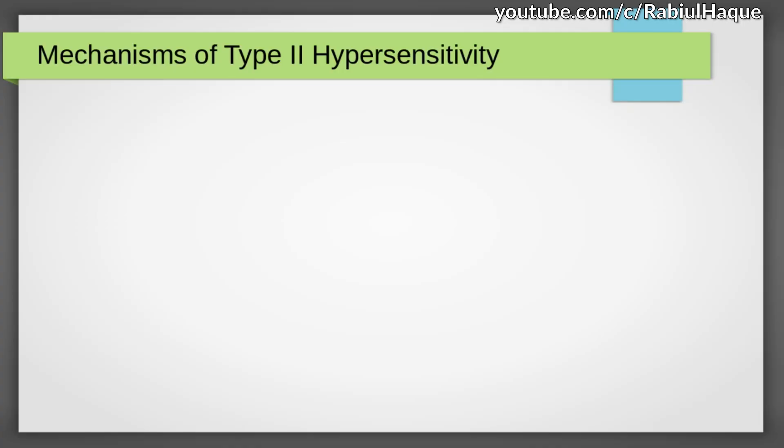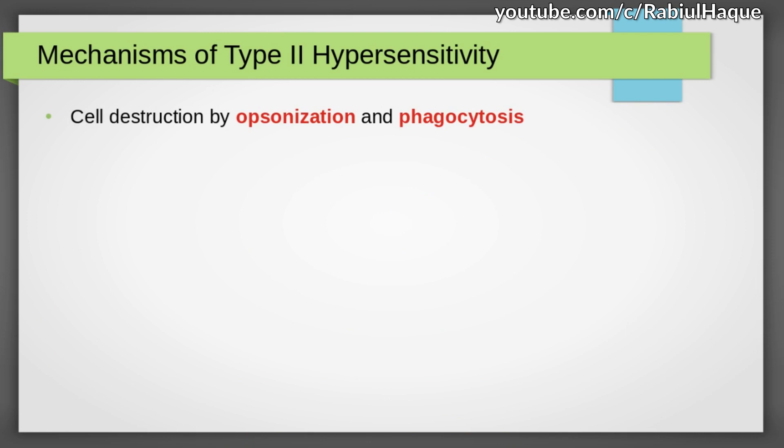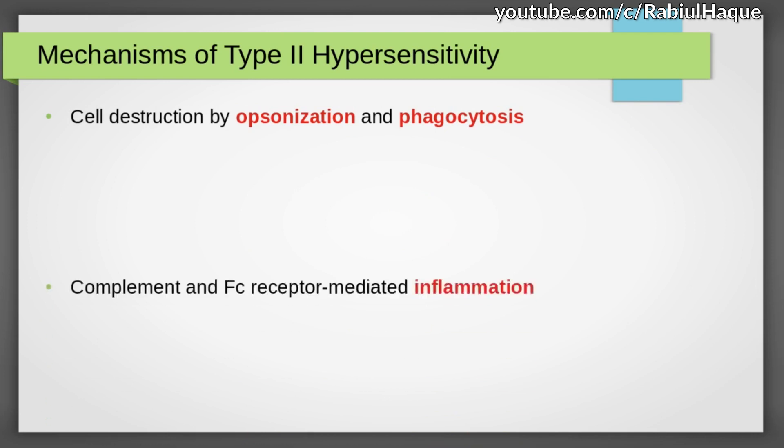There are several mechanisms of type 2 hypersensitivity. They are: cell destruction by opsonization and phagocytosis, complement and FC receptor mediated inflammation, and antibody mediated cellular dysfunction. Let's talk about these various mechanisms one by one.